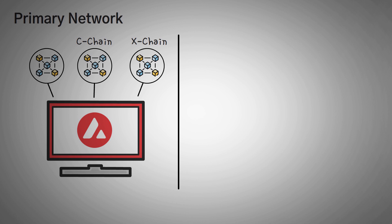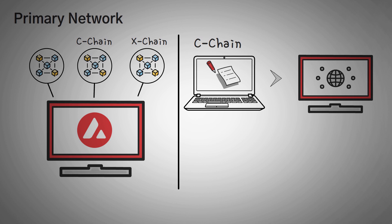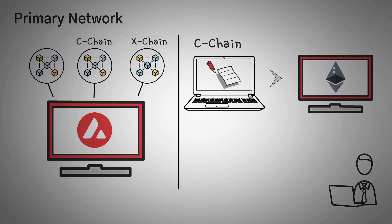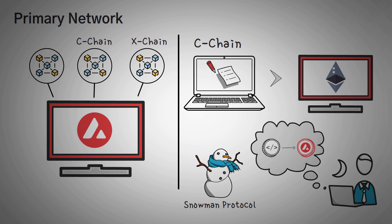Next up, we have the C-Chain, which is specifically for smart contracts. It is actually an exact copy of the Ethereum virtual machine, so you can instantly copy and paste and start using Ethereum dApps on the Avalanche network. In my opinion, they were very smart with this, allowing developers to move their projects over without doing much work. This chain also uses something called the Snowman Protocol, which I'll talk about in a minute.